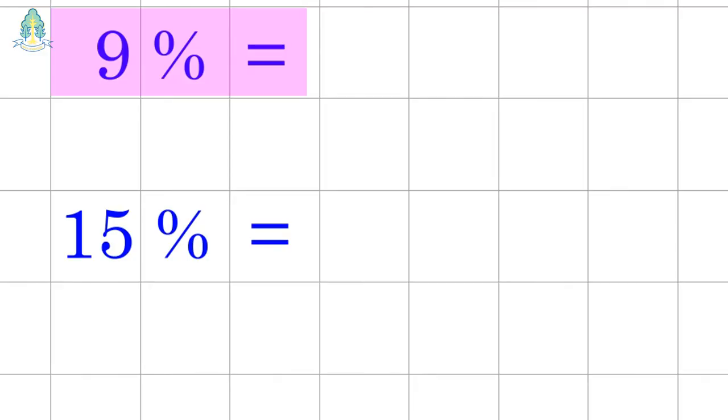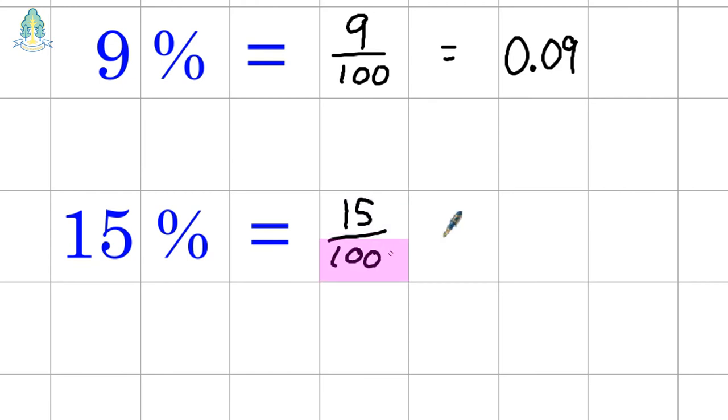9% means 9 per hundred. 9 over 100 can be considered as 9 divided by 100 to convert to the decimal fraction 0.09, moving it down two places smaller. By the same token, 15% means 15 per hundred which gives us 0.15 when we do 15 divided by 100.